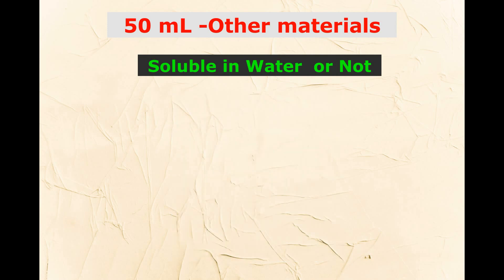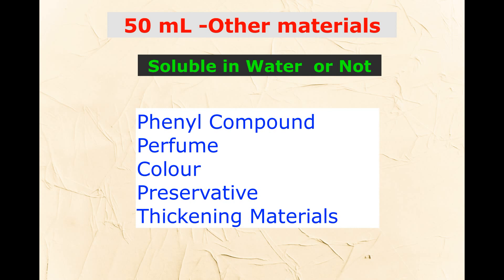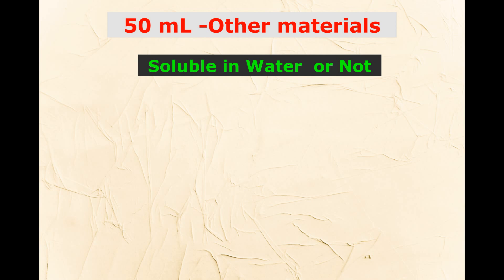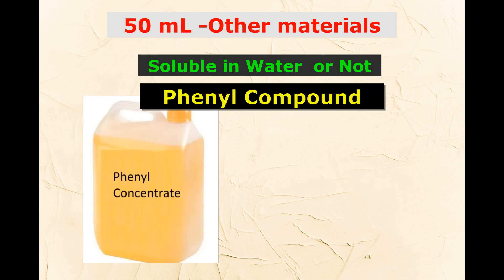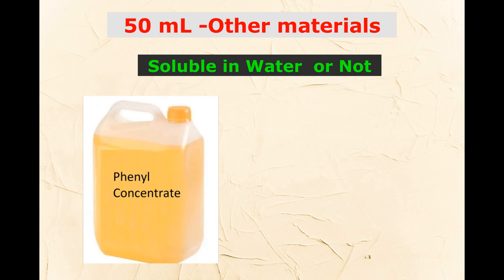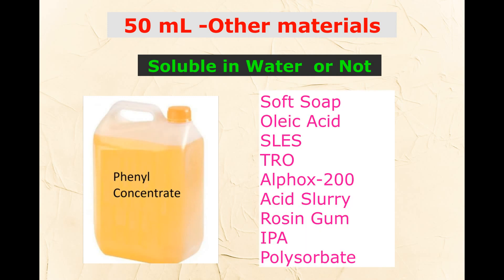In that 50 ml, the possible materials are: phenyl compound, perfume, color, preservative, and thickening materials. Phenyl compound is not a single chemical — it is a mixture of pine oil, emulsifier, and most probably some cleaning materials. Many formulas are available for phenyl compound preparation; two or three formulas are most popular. The possible materials in those formulas include soft soap, oleic acid, SLES, turkey red oil, alfax 200, acid slurry, rosin gum, IPA, and polysorbate — though some of these are rarely used.